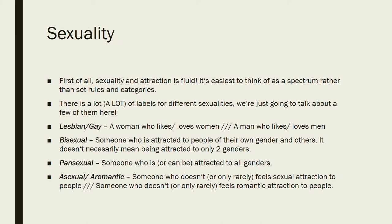The terms bisexual and pansexual can be a little tricky — they cause a lot of confusion because lines are often blurred between the two. Someone who is bisexual is attracted to people of their own gender and others. It does not necessarily mean being attracted to only two genders, even though that's what the name suggests. Pansexual is someone who is, or can be, attracted to all genders. Bisexuality and pansexuality can overlap, but they don't have to. Oftentimes people just feel more comfortable with one or the other label, and that's perfectly fine.